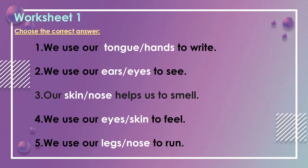Let us start with worksheet one. Choose the correct answer. Question 1: We use our tongue or hands to write — the correct answer is hands. Question 2: We use our ears or eyes to see — the answer is eyes. Question 3: Our skin or nose helps us to smell — the correct answer is nose. Question 4: We use our eyes or skin to feel — the answer is skin.